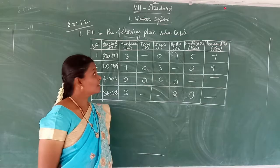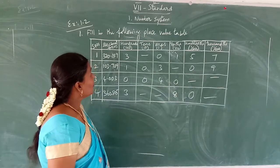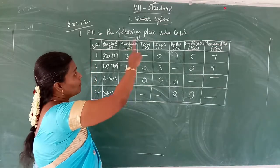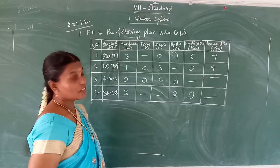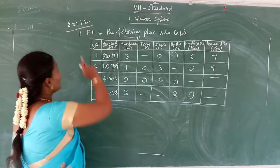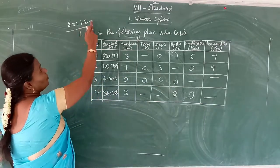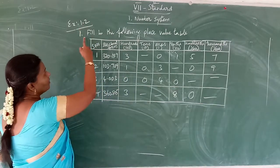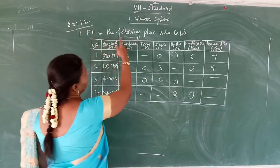Good morning. Good evening. We are going to see Number System, first chapter, Exercise 1.2. See the first sum: fill in the blank, fill in the following place value table.